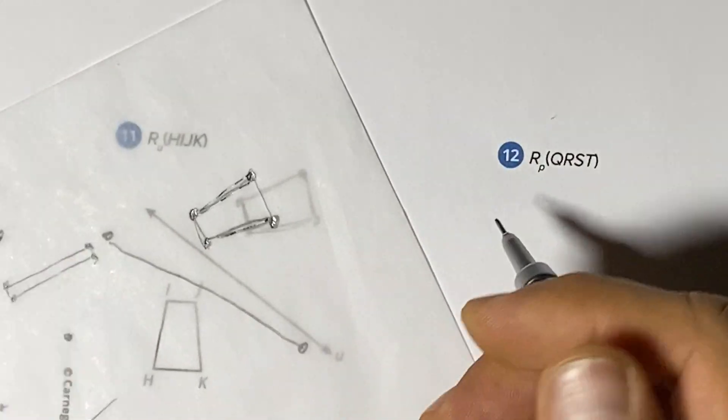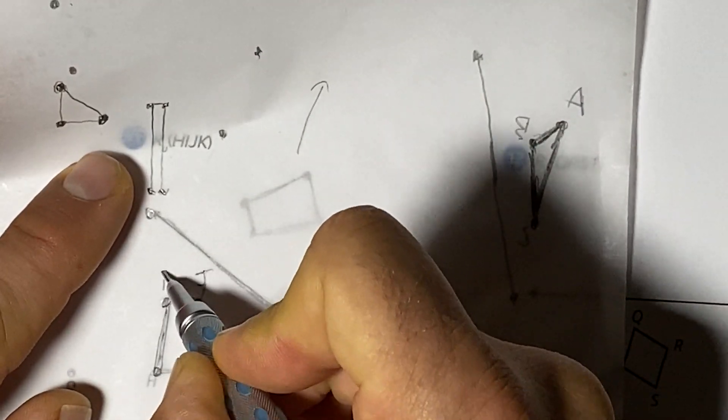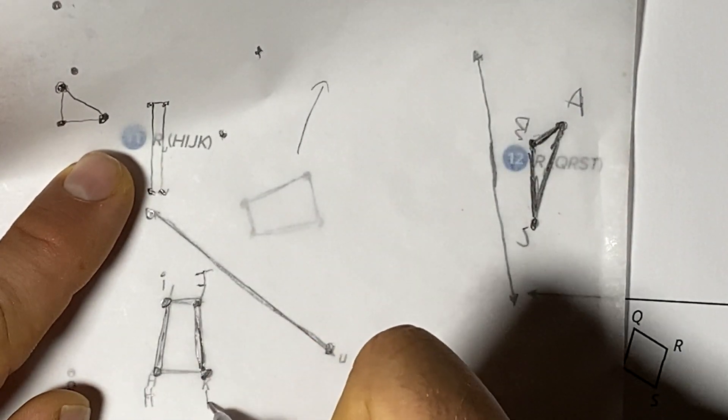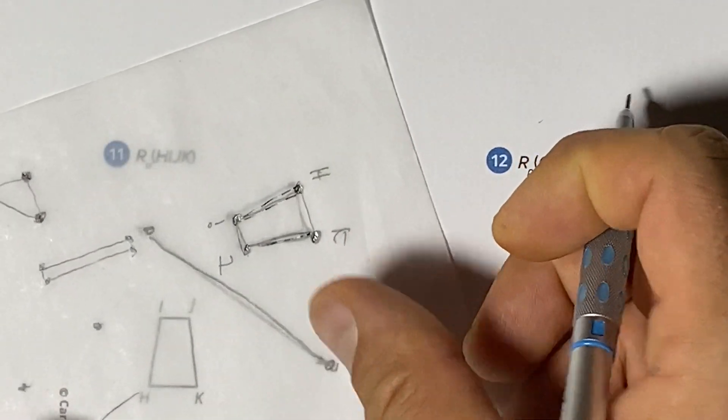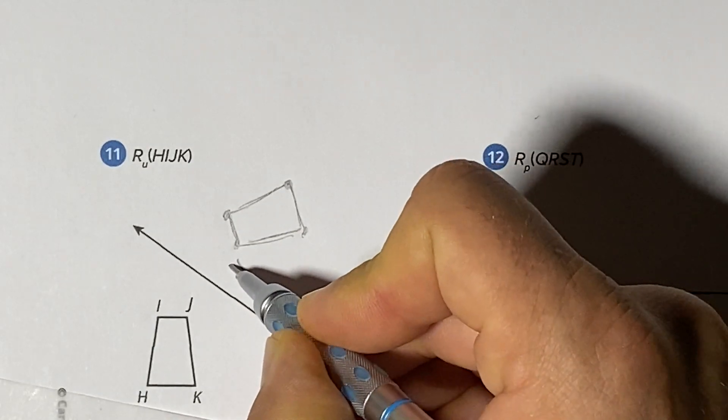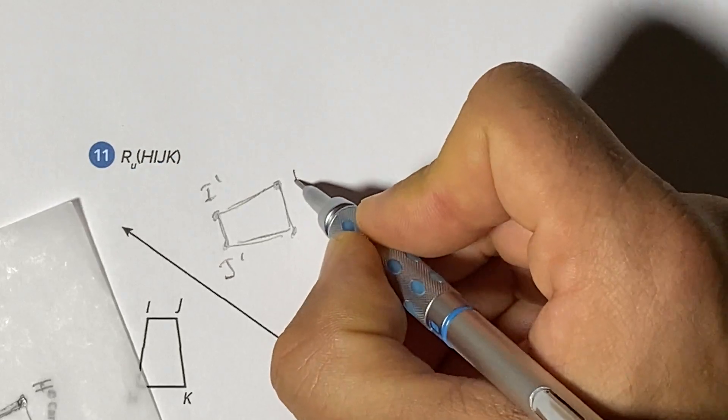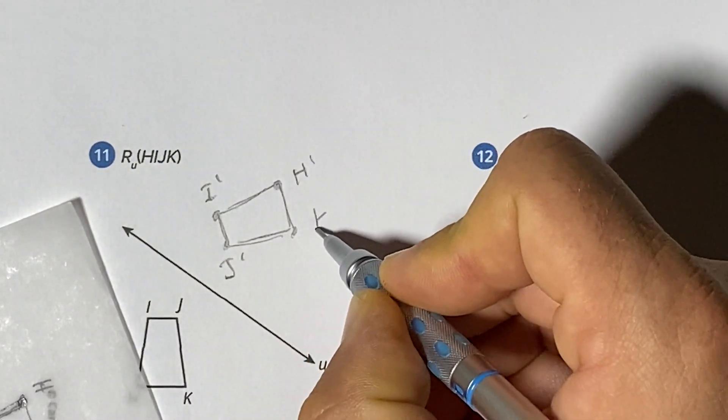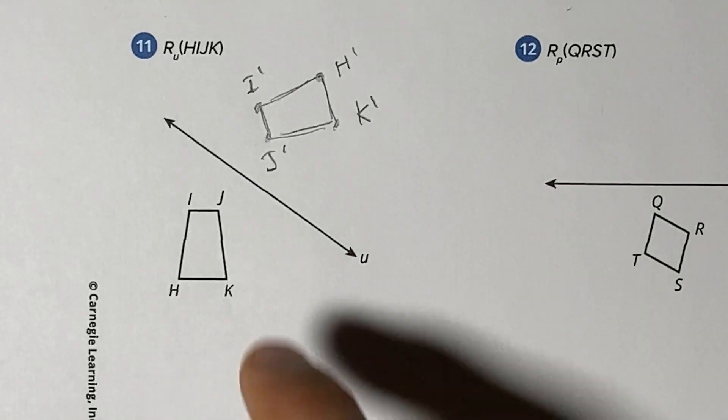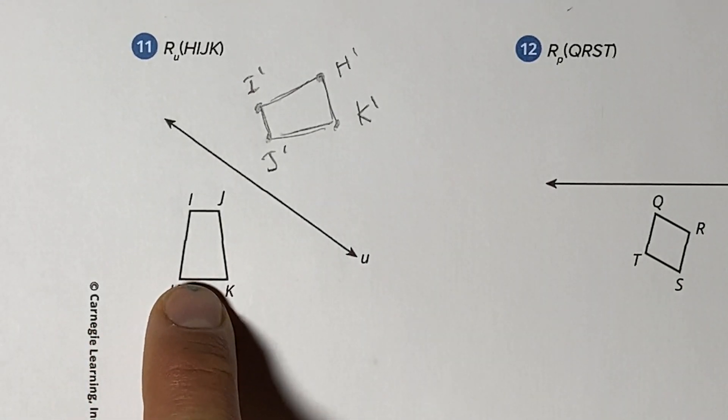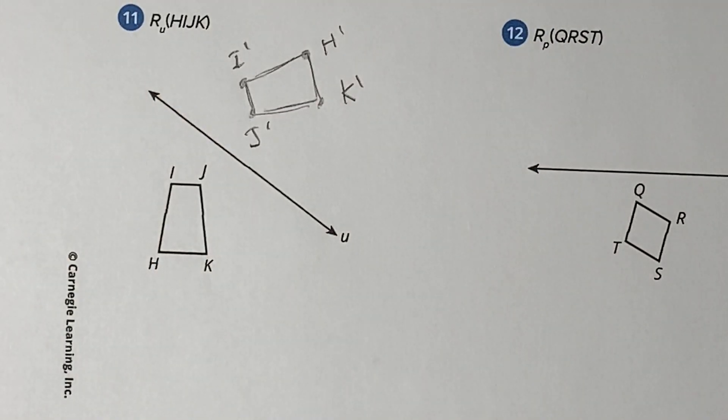Again, when we do this, it's best to take the letters with you, just to be sure. So when I flip it over, J is here, I is here, H is here, and K. So don't forget: trace the picture, trace the line, and don't forget to label your corresponding points.